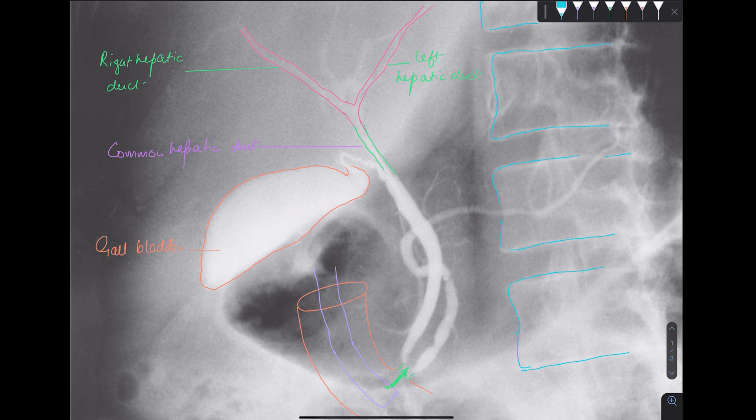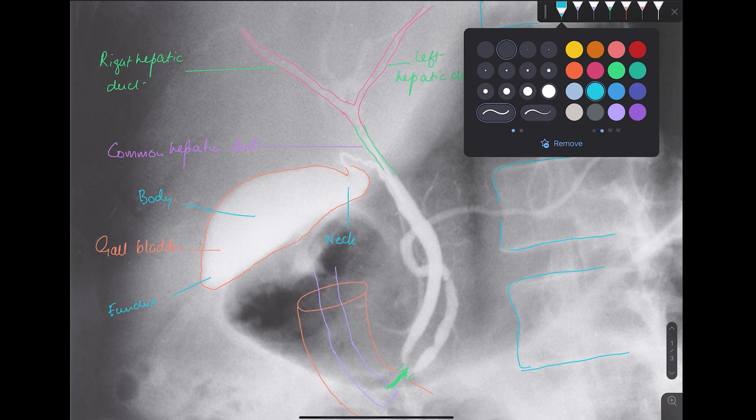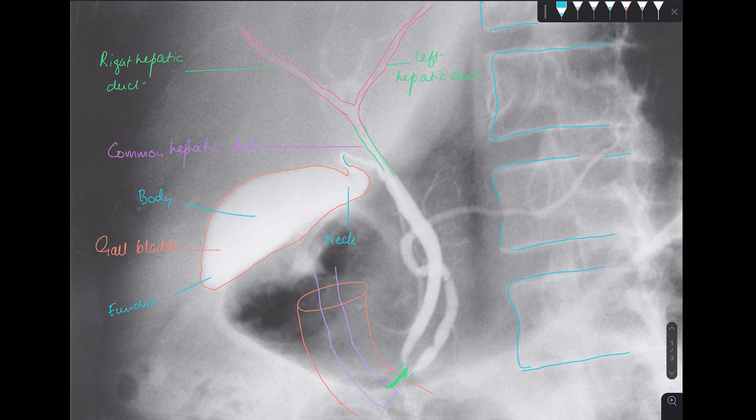So let's label these individual parts of the gallbladder. This is the fundus part. This part is the body. And this is the neck of the gallbladder. From there onwards, we have a duct. And this duct. It continues. And it joins what? It joins my common hepatic duct. And this duct, we call it cystic duct.